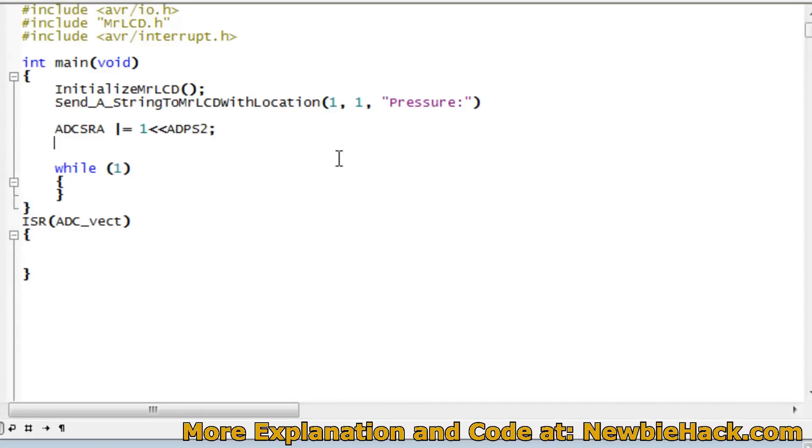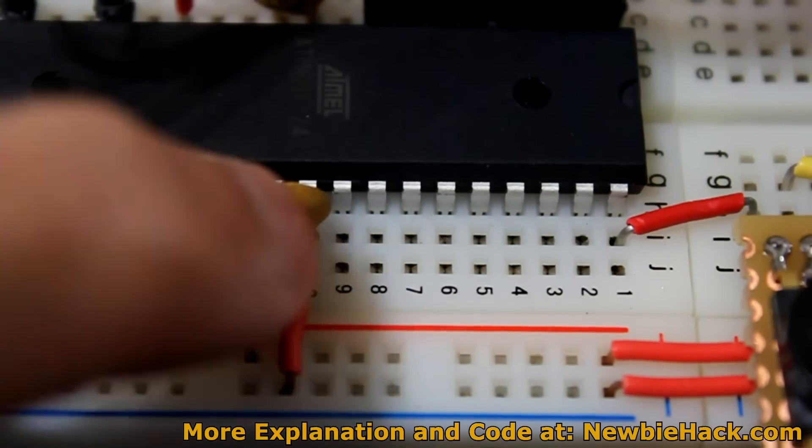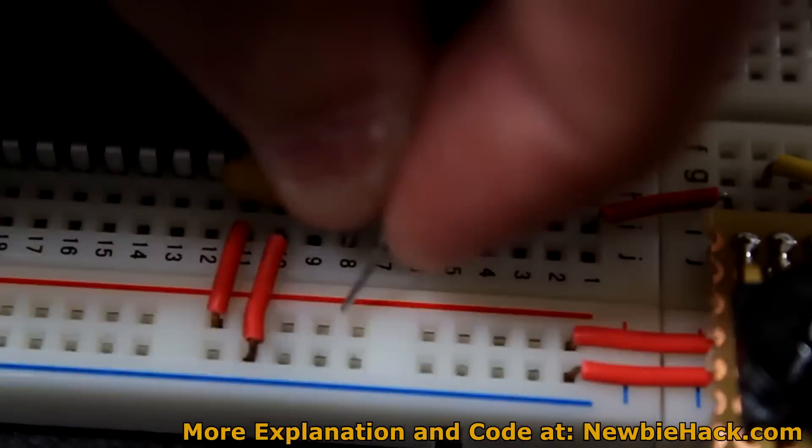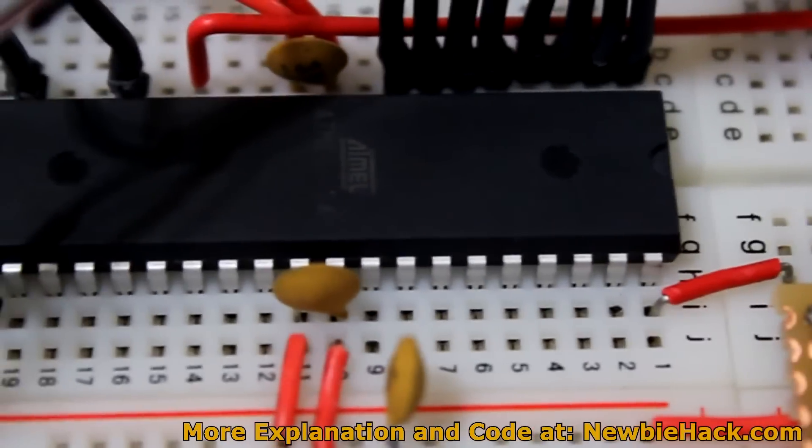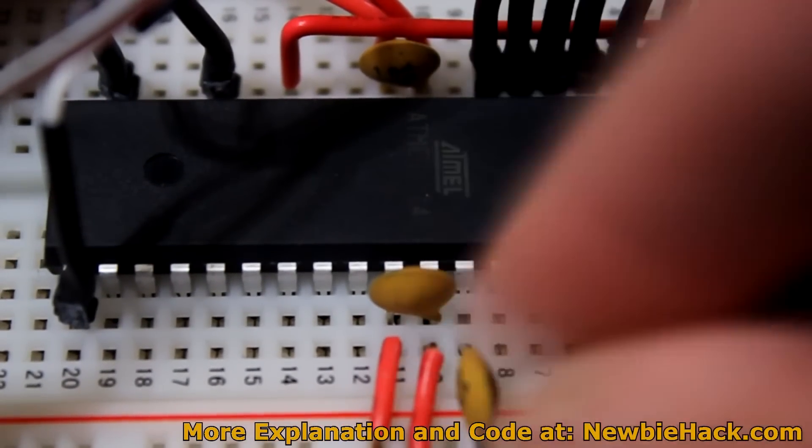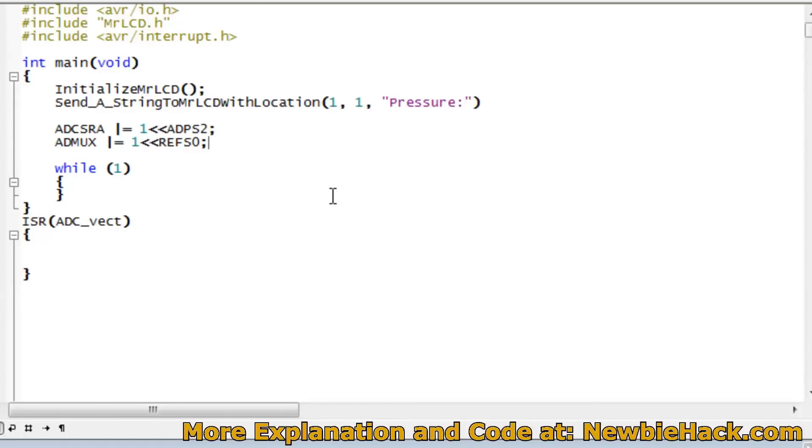And now we can set up our reference voltage, and that's under the ADMUX register. And we're going to OR the REFS0 bit. And what that does is it enables the AVCC as a reference pin, which is the 5 volts. But it also tells us we need an external capacitor at the AREF pin. And I forgot to put that in, so we can do that now. The AREF pin is right next to the GND pin, so I'll just put the capacitor from the AREF to GND as per the datasheet. So we have our voltage reference set up now.